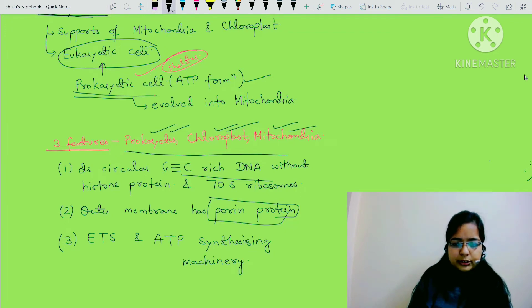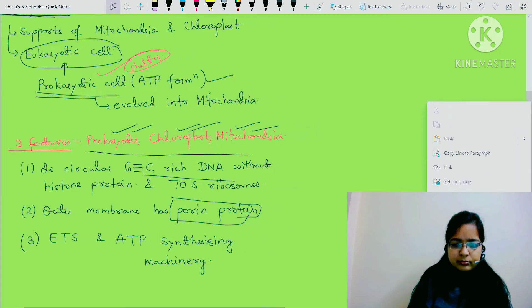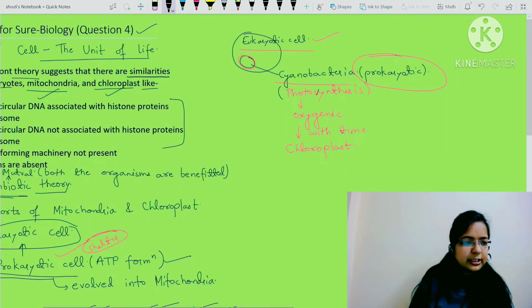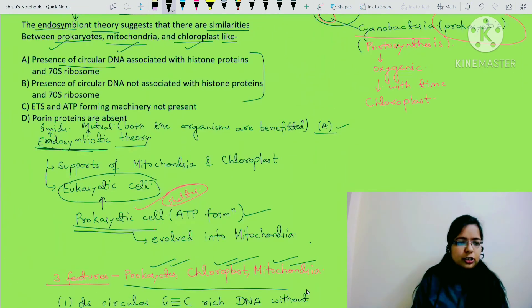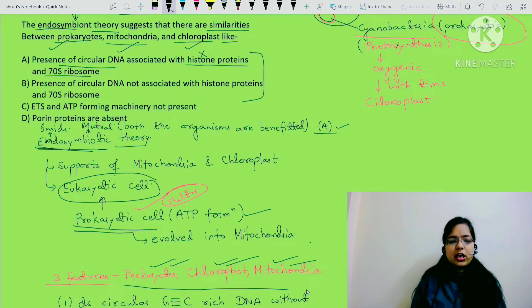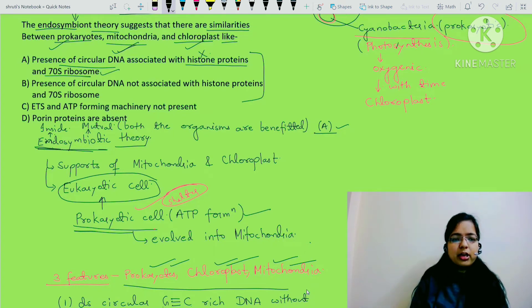Now let's look at the options. Option A is: circular DNA associated with histone proteins and 70S ribosome. Circular DNA is present, but it is NOT associated with histone proteins. 70S ribosome is also present, but because of the histone protein association being wrong, this option is incorrect.